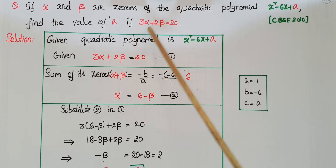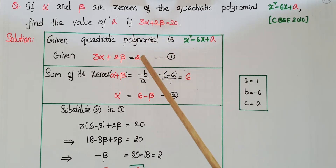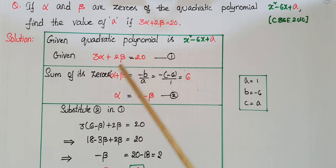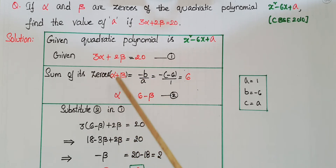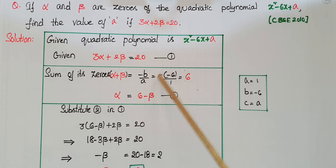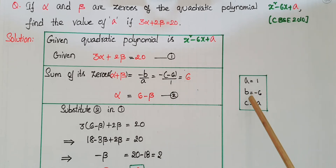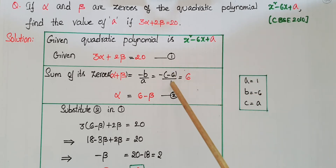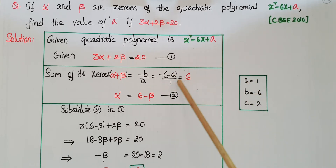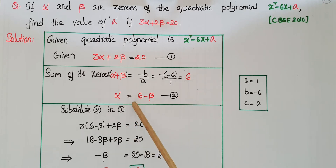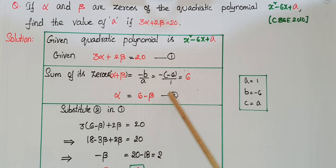Also given: 3 alpha plus 2 beta is equal to 20. And we know that the sum of its zeros, alpha plus beta, is equal to minus b by a, that is equal to minus of minus 6 by 1, that is 6. So alpha is equal to 6 minus beta. This is the second equation.